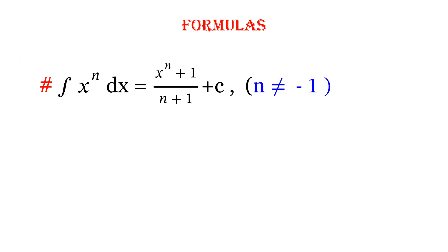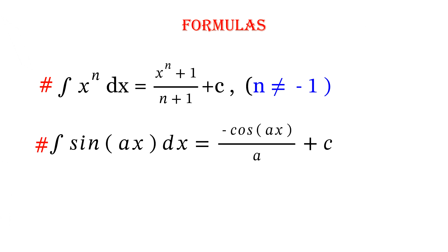Let's see the formulas. First one: integral of x^n dx equals x^(n+1) divided by (n+1) plus constant. This formula is not to be used for n equal to minus 1. The next integral: sine(ax) dx equals minus cos(ax) divided by a plus constant. Remember, this 'a' is the coefficient of x.